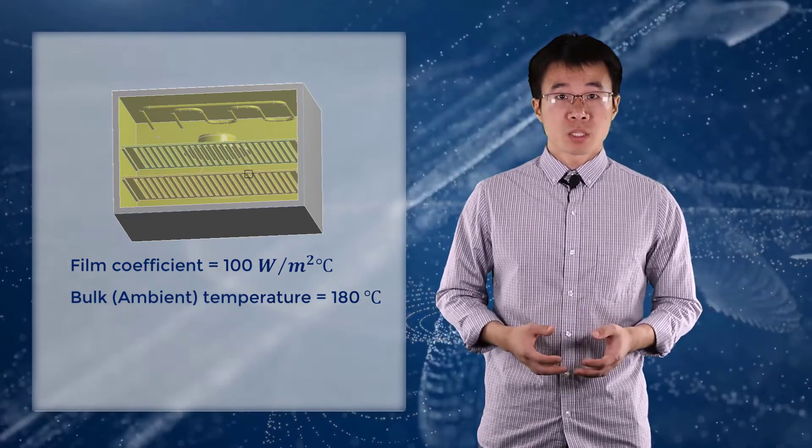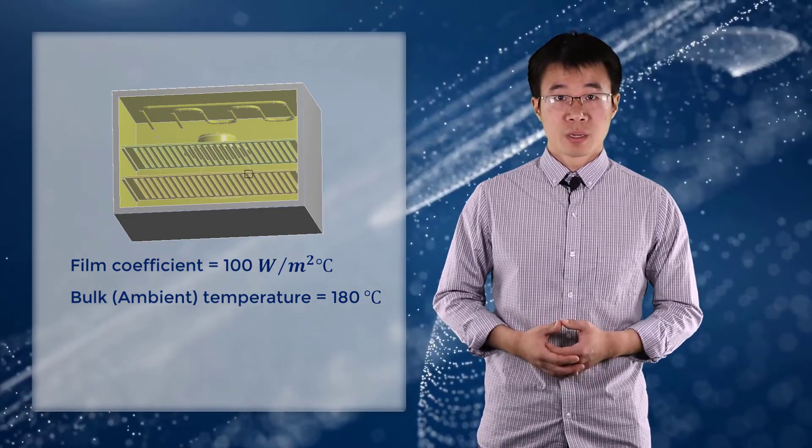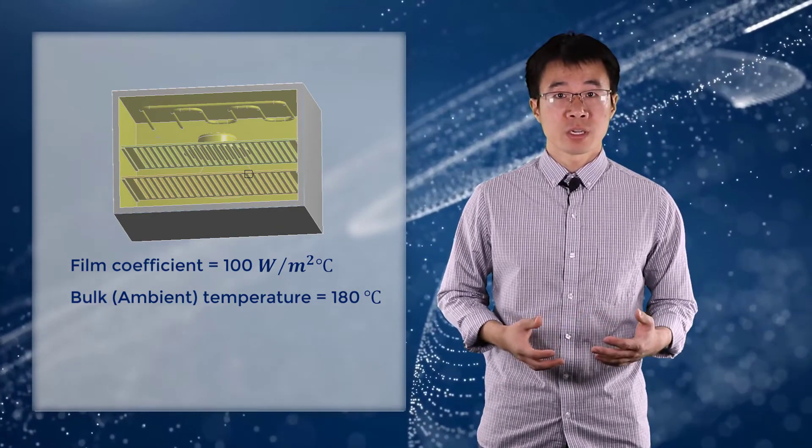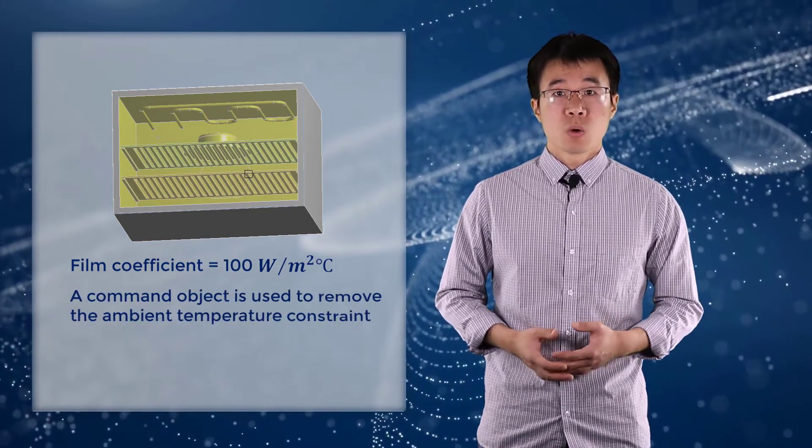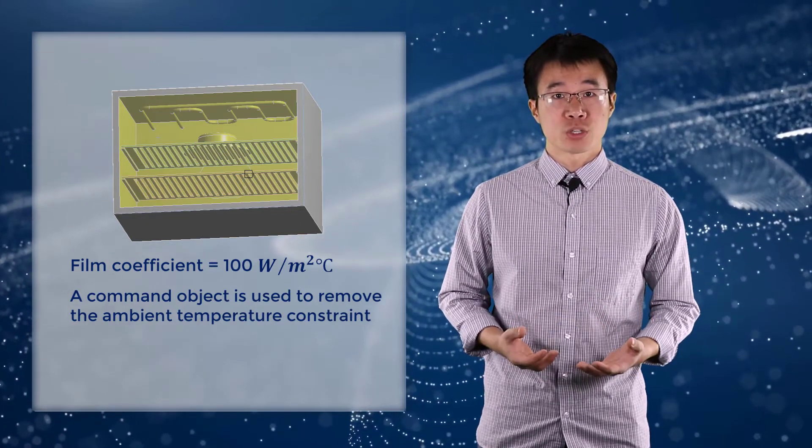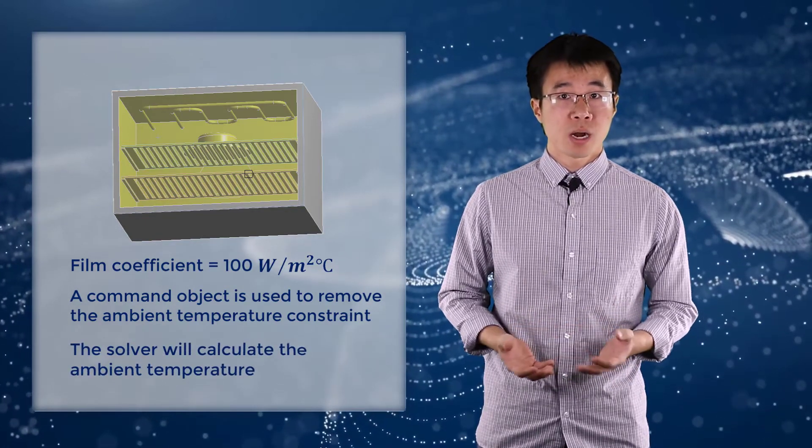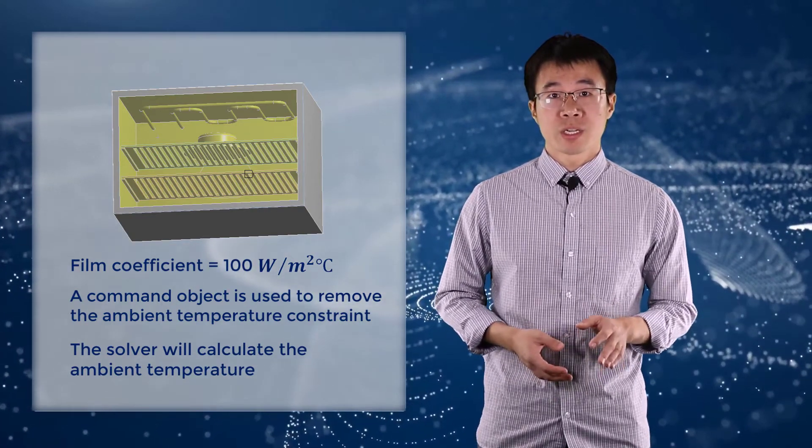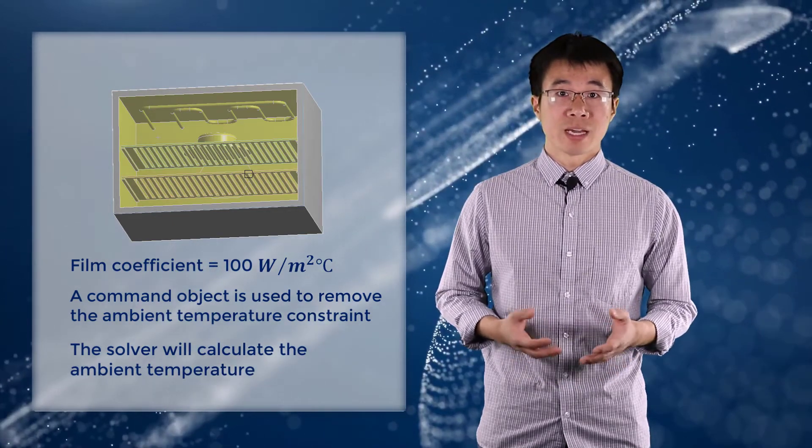However, by defining the bulk temperature inside the oven, we are specifying what the temperature should be as a priority. But doing so may end up providing unrealistically uniform heating and artificially adding or removing energy to the oven. So to avoid these drawbacks, we use a script or a command object to remove the ambient temperature constraint on the inner convection boundary condition and leave it undefined. Then the solver will calculate the ambient temperature for us that satisfies thermal equilibrium. So in summary, a better way of modeling convection inside the oven is leaving the ambient temperature undefined rather than imposing the temperature as a known value.